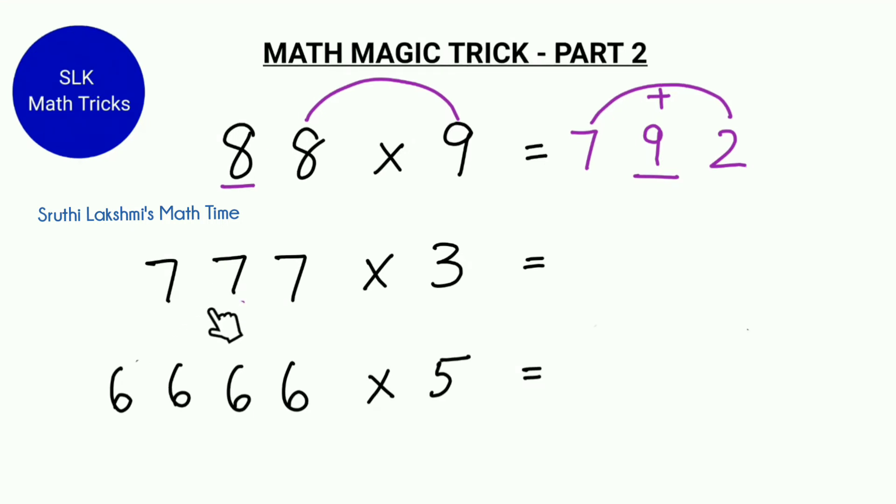Let's try 777 into 3. We first do 7 into 3 which is 21. We write 21 with a little gap in between. Then we see how many 7s are there before this 7. There are two 7s. So we come to know that there will be two numbers between these two numbers. So we add 2 plus 1 which is 3. So we fill 3 in the spaces here. So 777 into 3 is 2331.